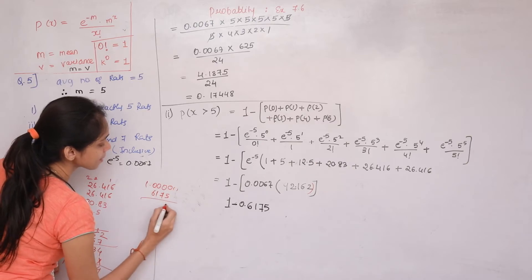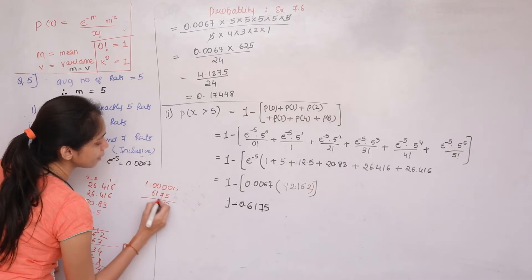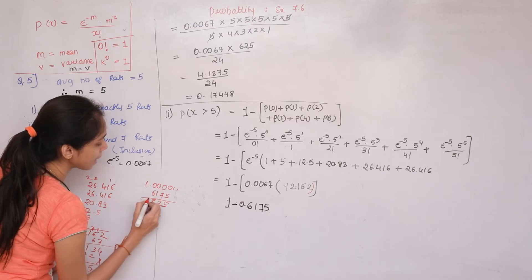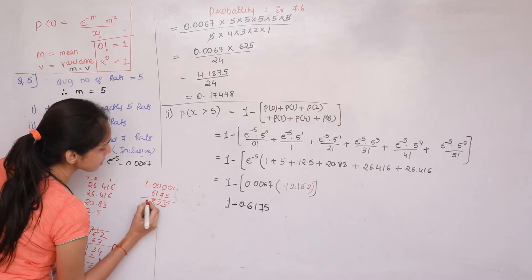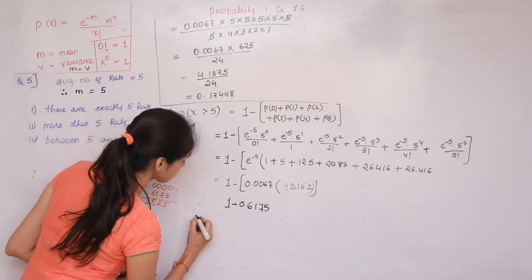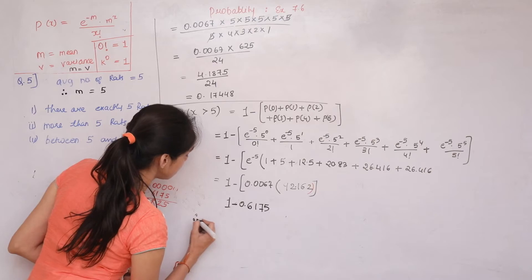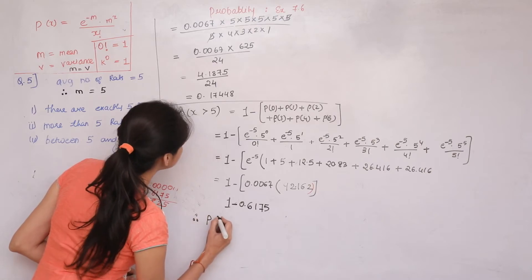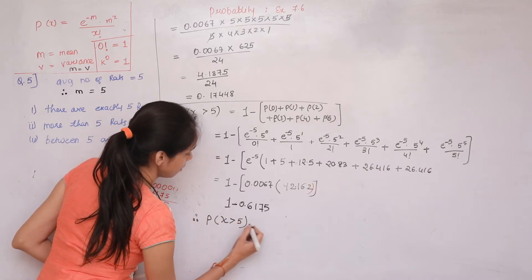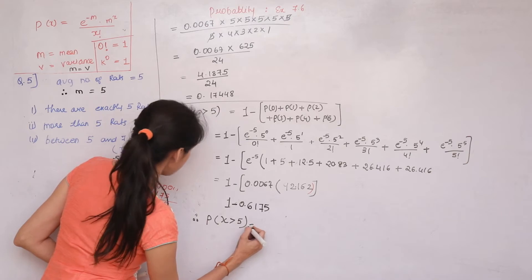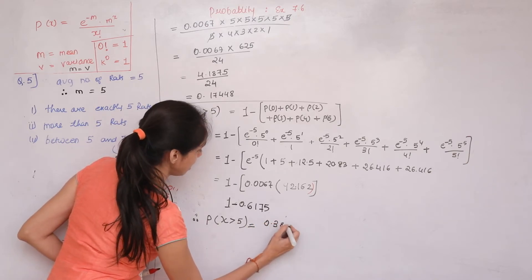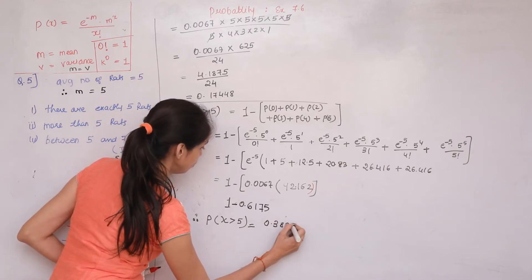Computing 1 − 0.6175: 10−5=5; 9−7=2; 9−1=8; 9−6=3. Therefore P(X > 5) = 0.3825. This is our final answer for the second condition of question 5.